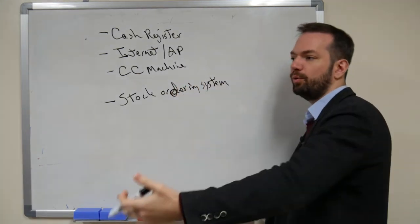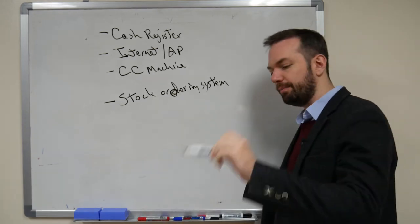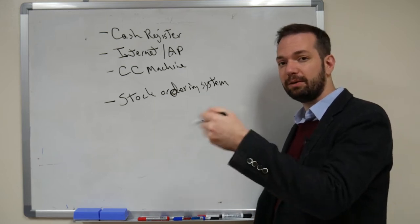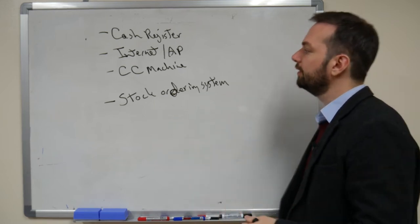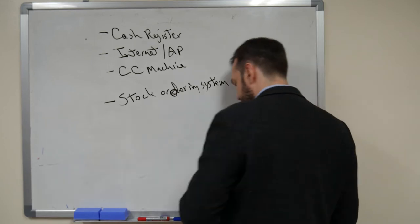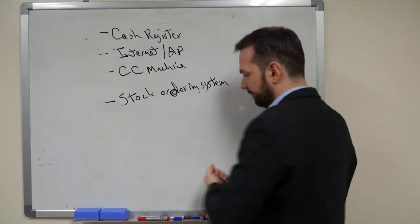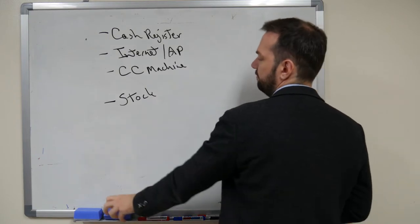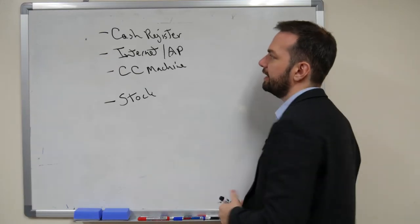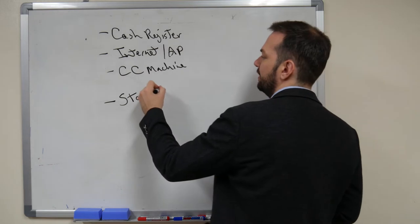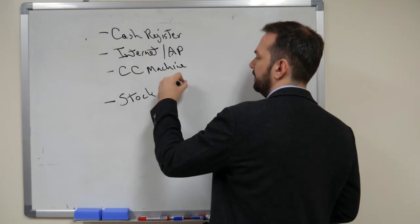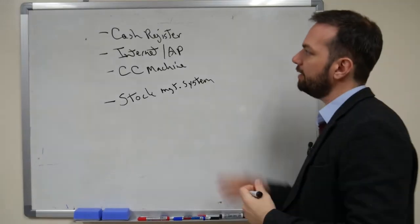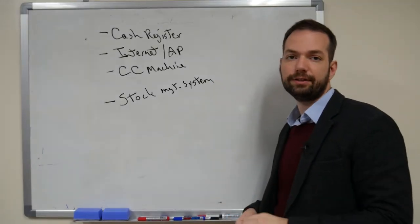So stock management. If I need to order more vegetables, for example, they can either go to the market or they can actually order them in a stock management system, and it will automatically be shipped to them. So stock ordering system. Let's say it's a small business like a kimbap shop or something like that. They probably have all of these technologies.